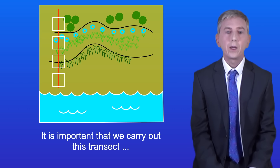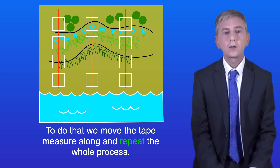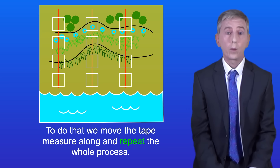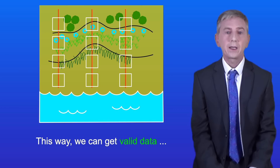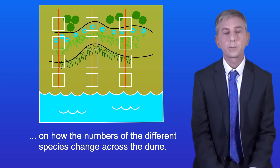It's important that we carry out this transect a number of times to get valid results. To do that we move the tape measure along and repeat the whole process. This way we can get valid data on how the numbers of the different species change across the dune.